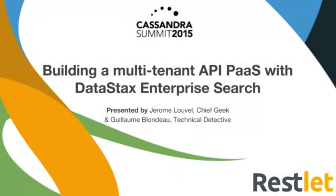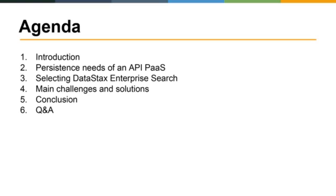Let's get started with a quick overview of the agenda. We'll introduce the topic, then explain the persistence needs and requirements we define for our API platform as a service. We'll explain how we came to select DataStax Enterprise Search as our main persistence technology, then move to the main technical challenges we faced and how we solved them. We'll conclude and save time for questions and answers.